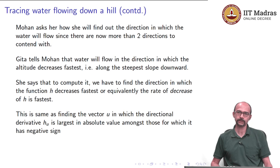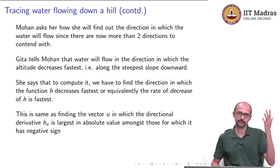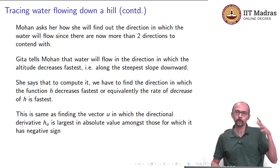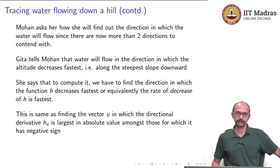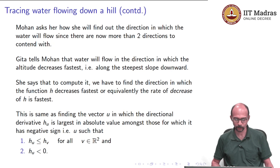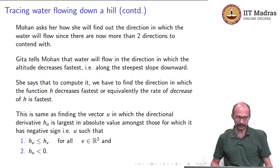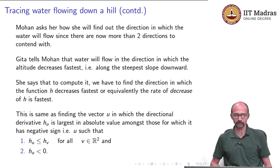In other words, we want the vector u such that h_u is less than or equal to h_v for all v in R², meaning h_u is the smallest value, and we also demand that h_u is negative. If it were smallest but positive, that would not help. So Gita has given a more realistic formulation of the same question. Now we come to the main point of this video: how do we find that direction?